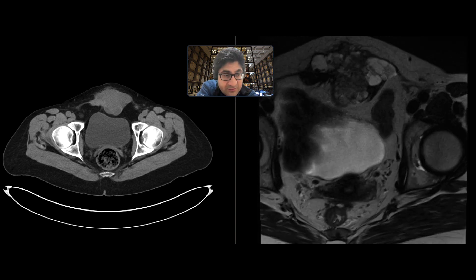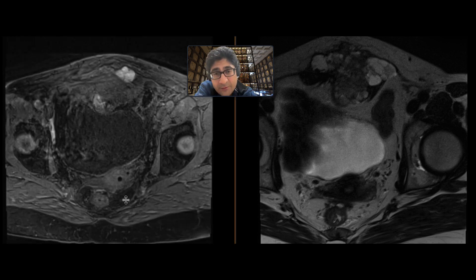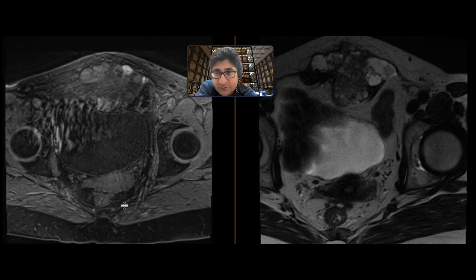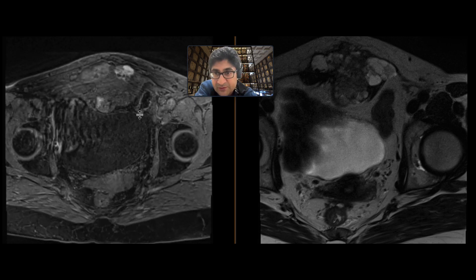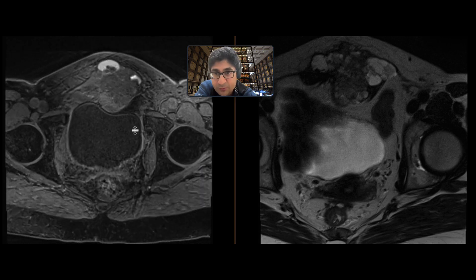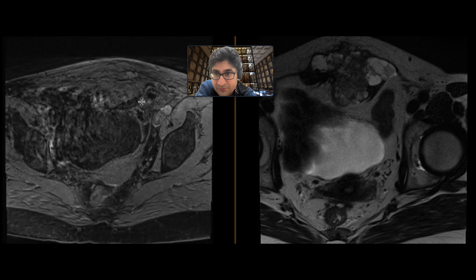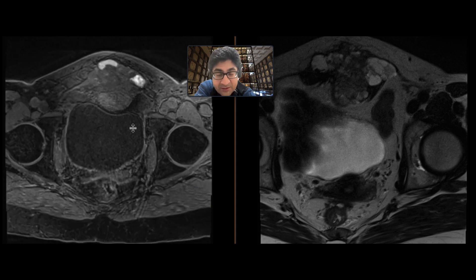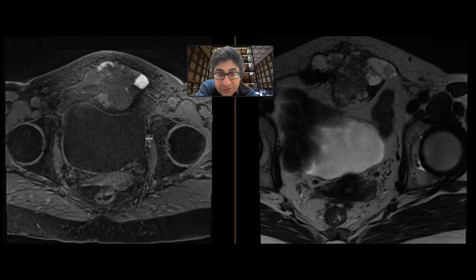Let's look at it on the T1 pre-contrast sequence. What's interesting on this sequence is that there are also areas of hemorrhage or proteinaceous debris within this mass — quite a bit of it, actually. There are soft tissue components as well as components that contain some hemorrhagic and/or proteinaceous debris.